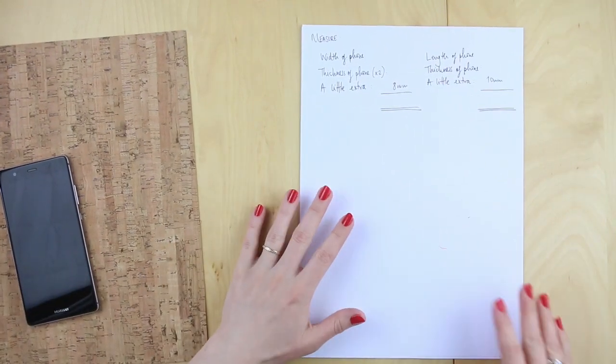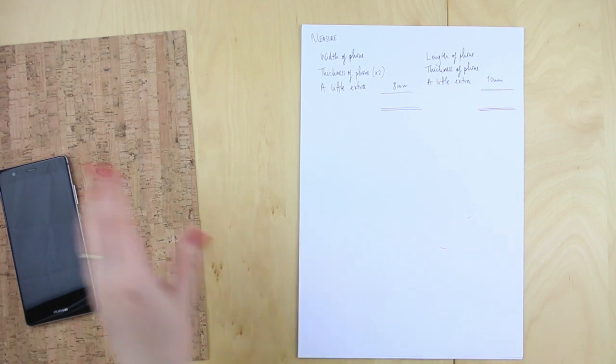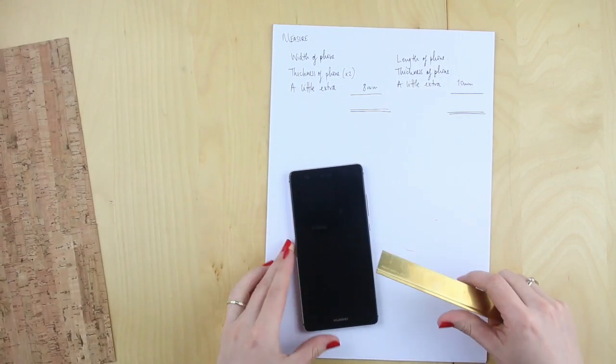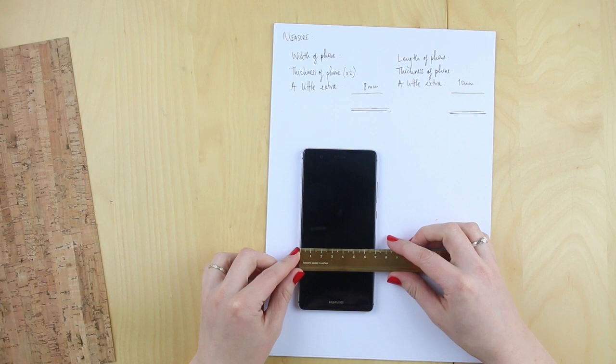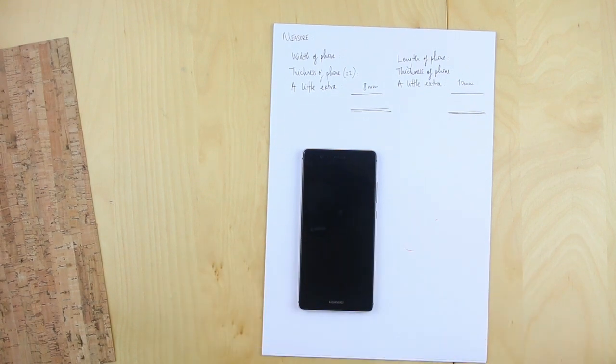You'll find these notes in your instructions but just in case you're not working from them. If you take your phone, first of all, you're going to measure the width of your phone and then just jot that down.